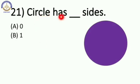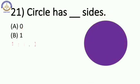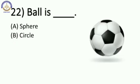Next: a circle has no sides and no corners. So the answer is 0. Answer is A, 0.